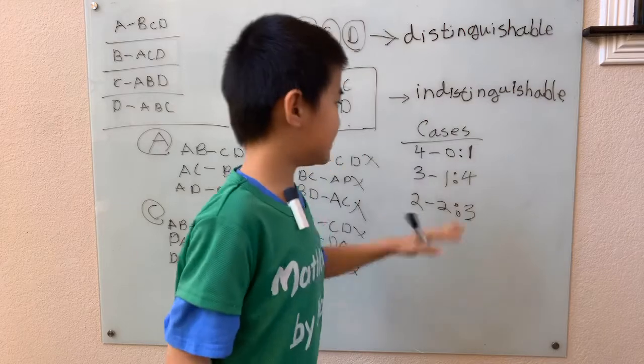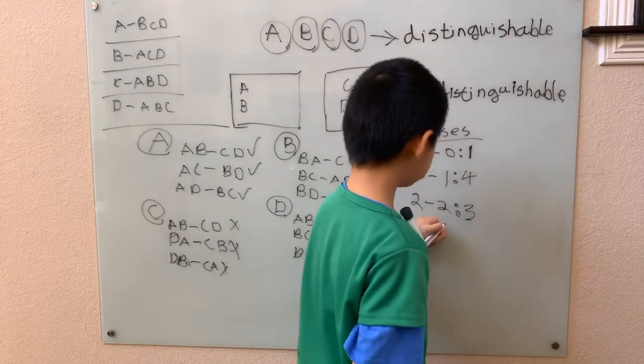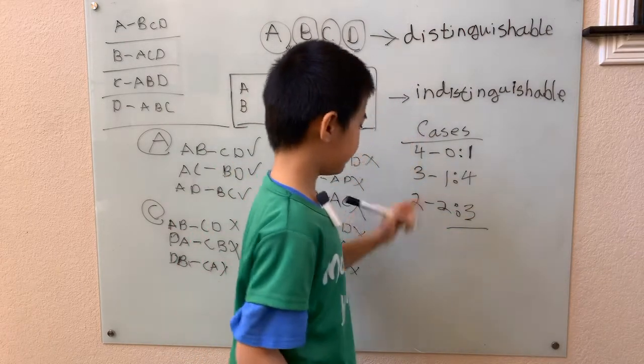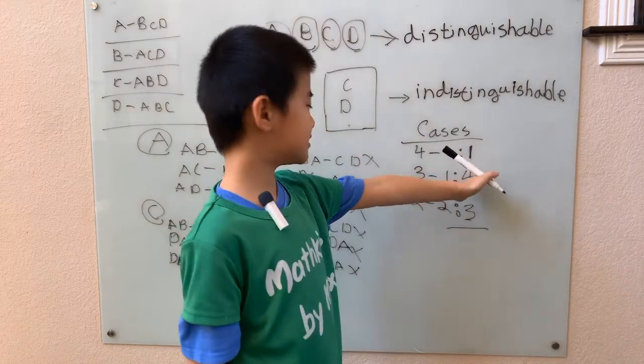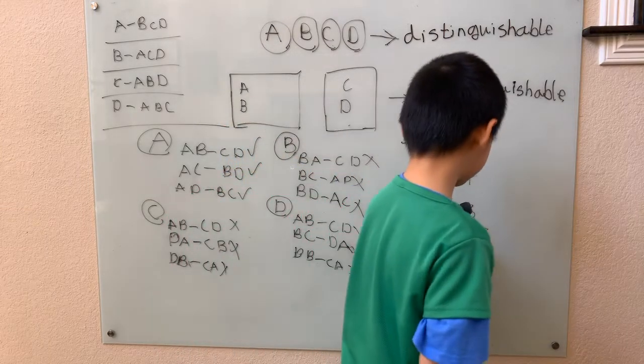Adding it all up: one for the four-zero case, plus four for the three-one case, plus three for the two-two case — that's one plus four is five, and five plus three is eight.